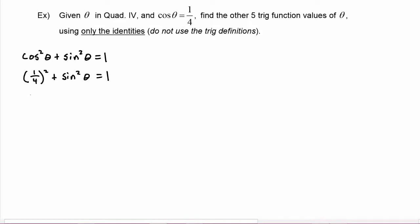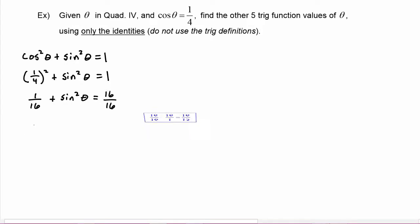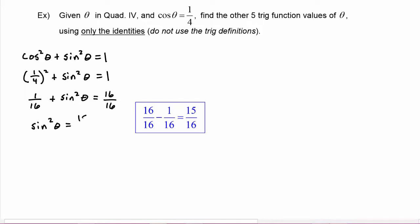One fourth squared is one sixteenth. So we have one sixteenth plus sine squared of theta equals one, which we can write as sixteen over sixteen. Subtracting one sixteenth from both sides, sine squared of theta is equal to fifteen over sixteen.